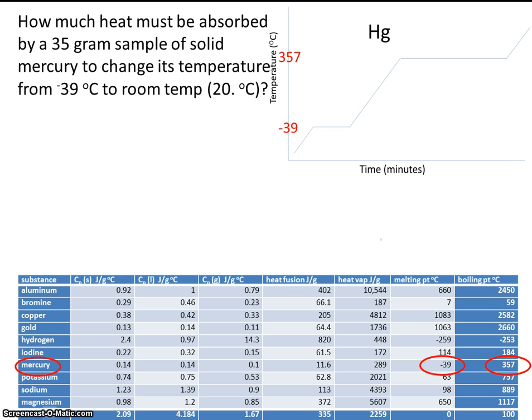Okay, let's read our problem again carefully. How much heat is absorbed? So right away absorbed, we know that heat is going in. If heat is going in, that means it's going to be an endothermic reaction, and ultimately our answer should have a positive value. How much heat is absorbed by a 35 gram sample of solid mercury to change its temperature from -39 to 20?